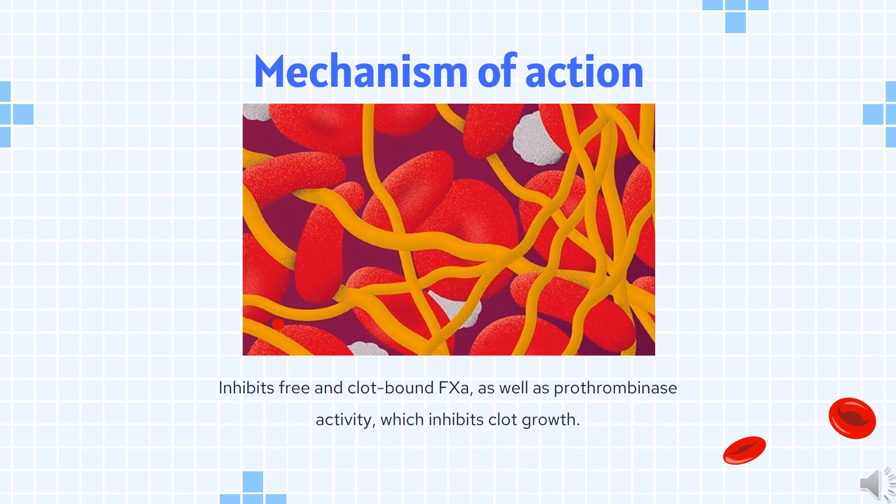Mechanism of Action: Apixaban inhibits free and clot-bound FXA, as well as prothrombinase activity, which inhibits clot growth. By inhibiting FXA, apixaban decreases thrombin generation and thrombus development. It has no direct effect on platelet aggregation, but indirectly inhibits platelet aggregation induced by thrombin.